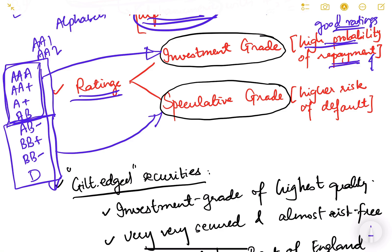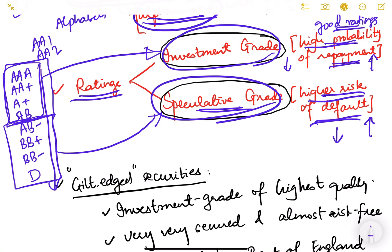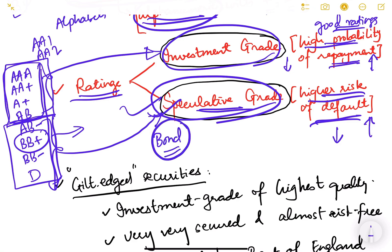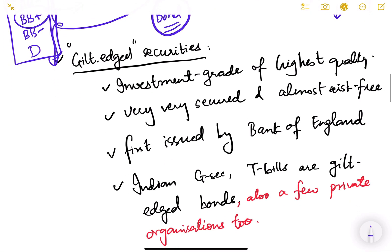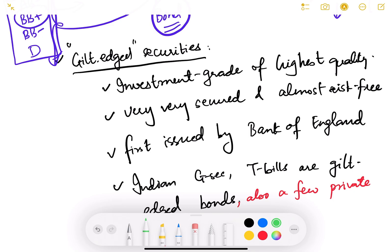Investment grade means the probability of repayment is very high and probability of default is low. Speculative grade means high risk of default — probability of default is high and probability of repayment is low. Companies are classified as investment grade or speculative grade depending on their ratings. For example, if a bond has a BB plus rating, it is a speculative grade investment.